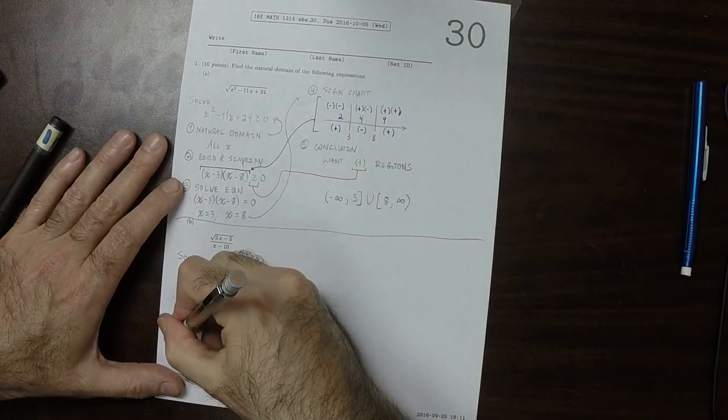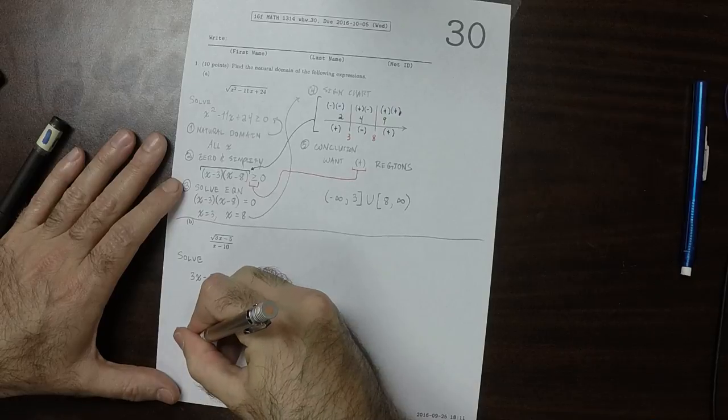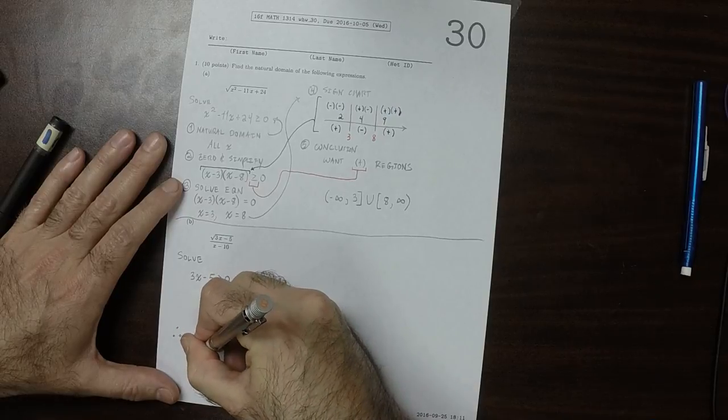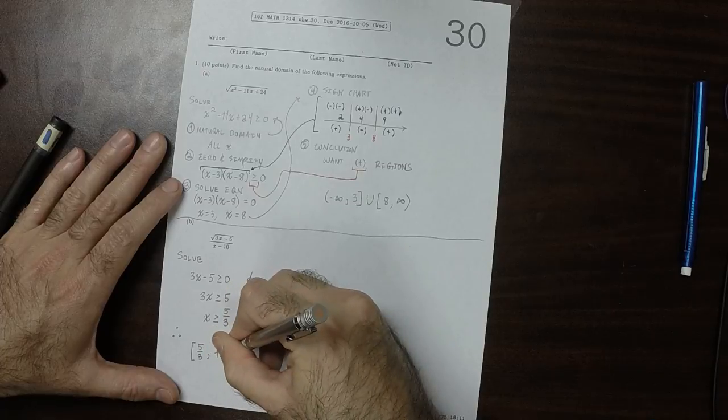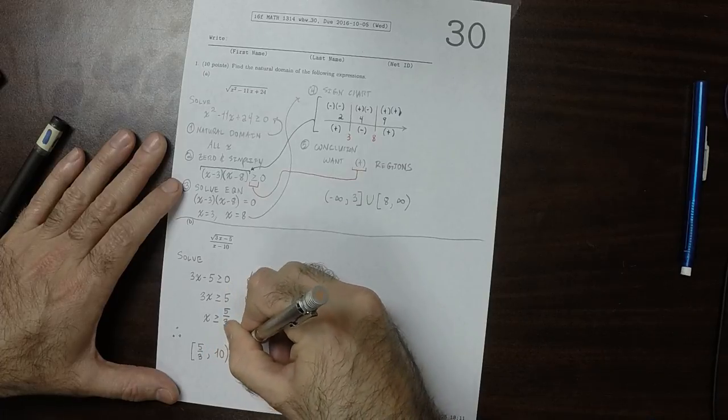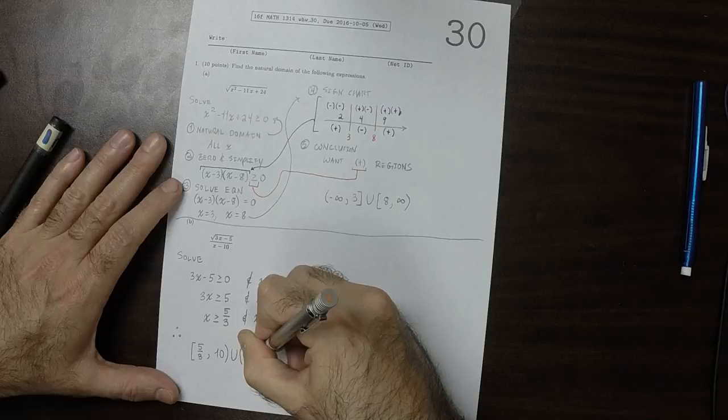So the answer is 5 thirds to 10, union 10 to infinity.